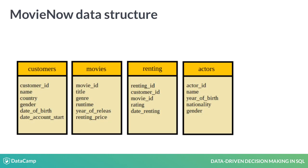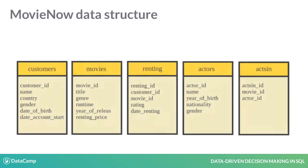The table Actors contains information about the actors in the movies. Besides the unique identifier Actor ID, we have the actor's name, year of birth, nationality and gender. The table Acts In shows which actor appears in which movie. Besides the unique identifier Acts In ID, it includes Movie ID and Actor ID.